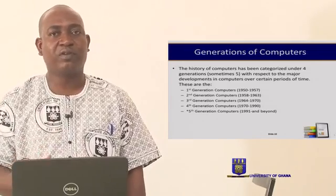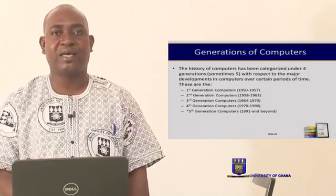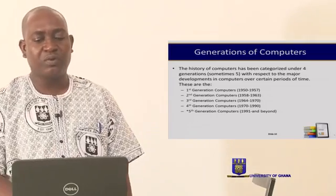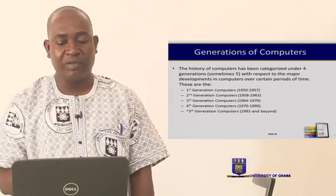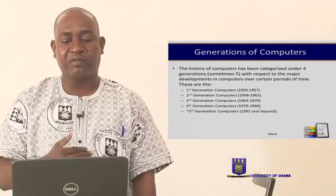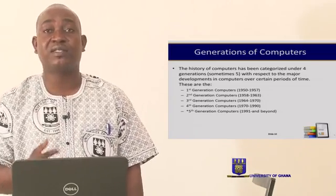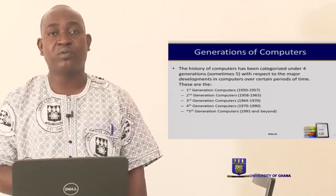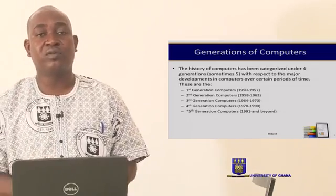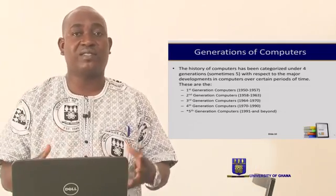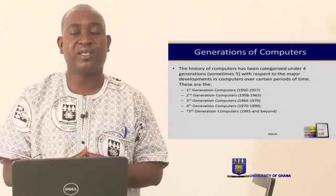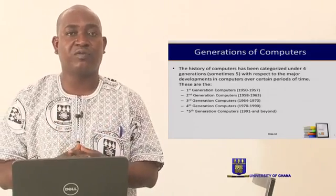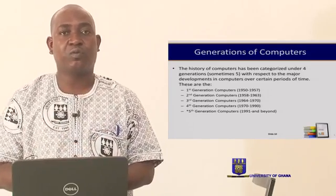The second generation computers came in from 1957 to 1963. Instead of vacuum pumps, they used what we call transistors. With these transistors, the size of these computers was reduced.